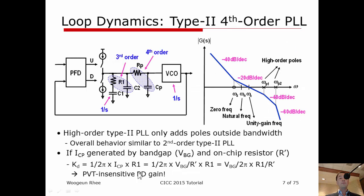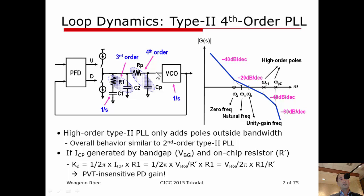For PLL designers, it's very important to know how to draw an open-loop gain by hand, which is very useful when you have to debug a test chip or during initial design. This is a typical Bode plot of the open-loop gain for a type-2 fourth-order PLL. First, there are two integrators: one is from the VCO, because the VCO is a voltage-to-frequency converter, and since we are analyzing the PLL in the phase domain, there is an inherent pole at DC in the VCO.